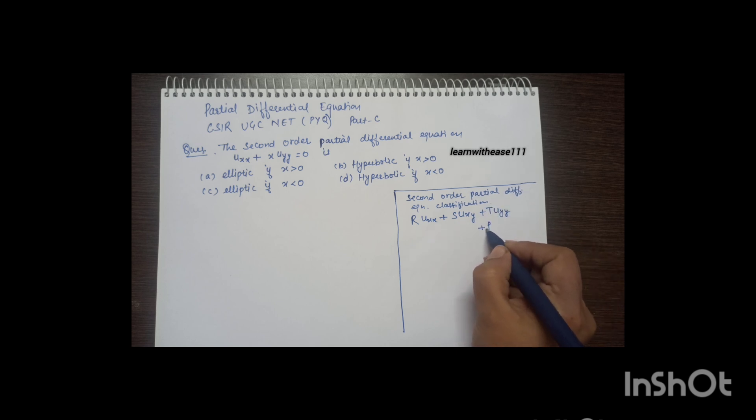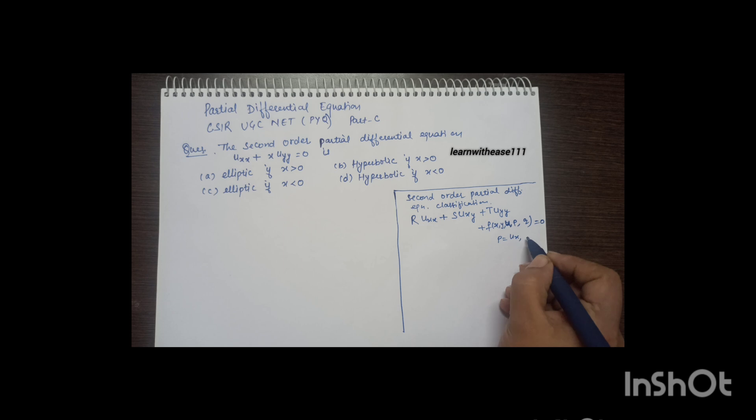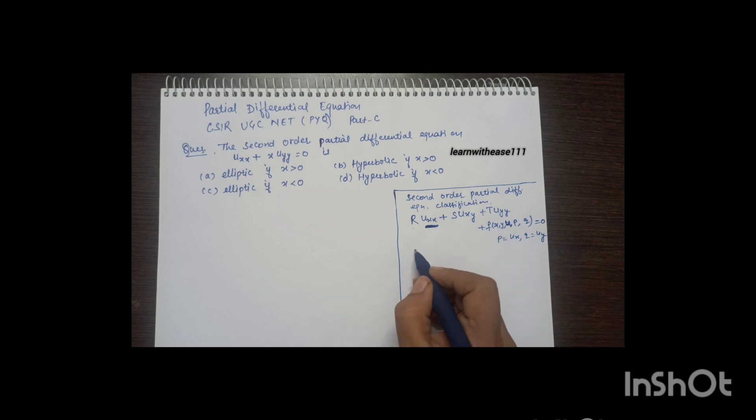Plus some function of x, y, u, p, q equals 0, where p is the partial derivative of u with respect to x and q is the partial derivative of u with respect to y.